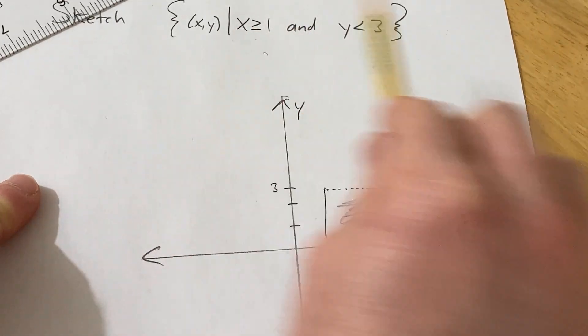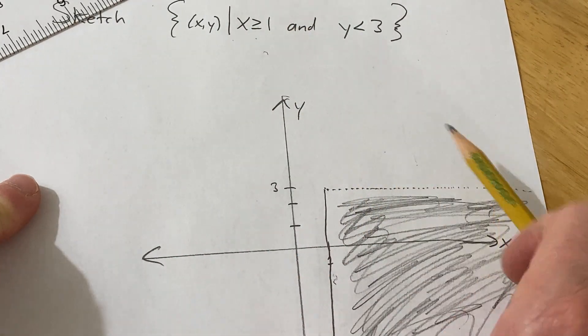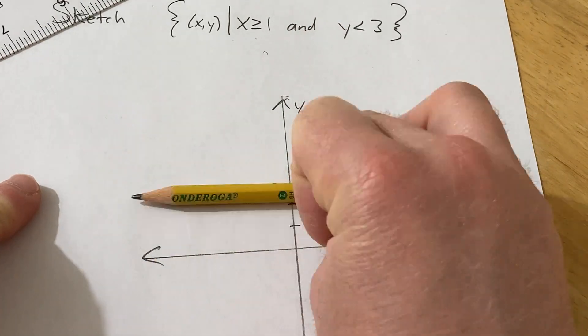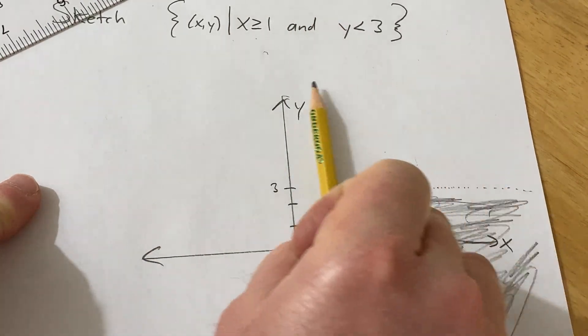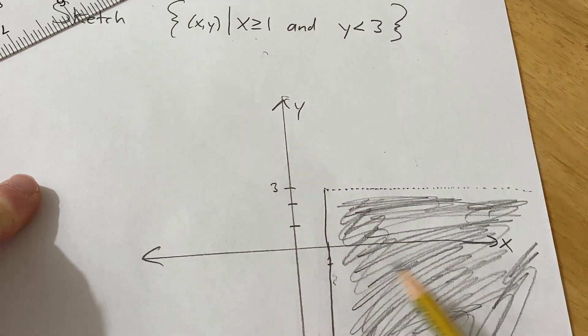And if you just look at y less than 3, it's all of this. So when you intersect all of this with all of this, you get this region here.